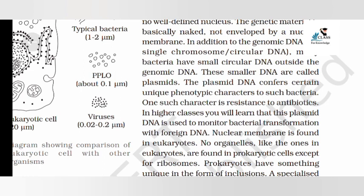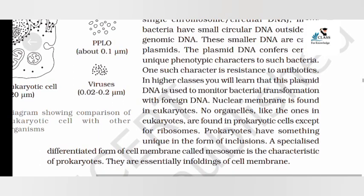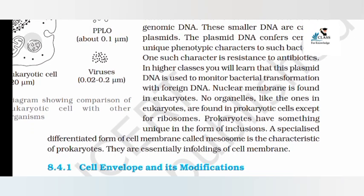In addition to the genomic DNA — the single chromosome's circular DNA — many bacteria have small circular DNA outside the genomic DNA. These smaller DNA are called plasmids. The plasmid DNA confers certain unique phenotypic characters to such bacteria.